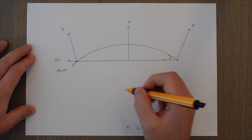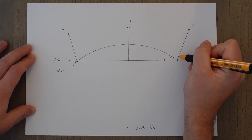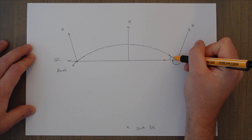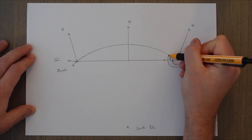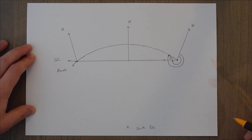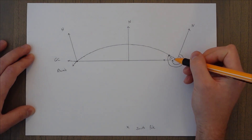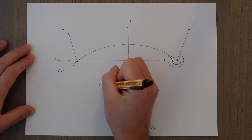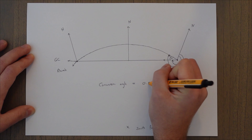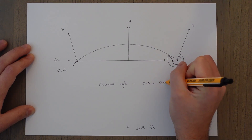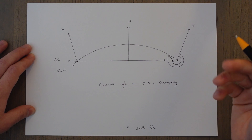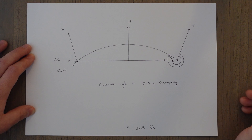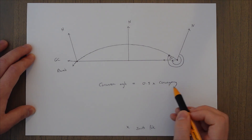There is clearly a difference between our starting great circle track and our starting rhumb line track. This angle is known as the conversion angle, because it converts us from a great circle to a rhumb line. The conversion angle is equal to 0.5 times the convergency. So if we know the great circle track, we can work out the rhumb line and vice versa, using the convergency and the conversion angle. The conversion angle is always 0.5 times the convergency — always.